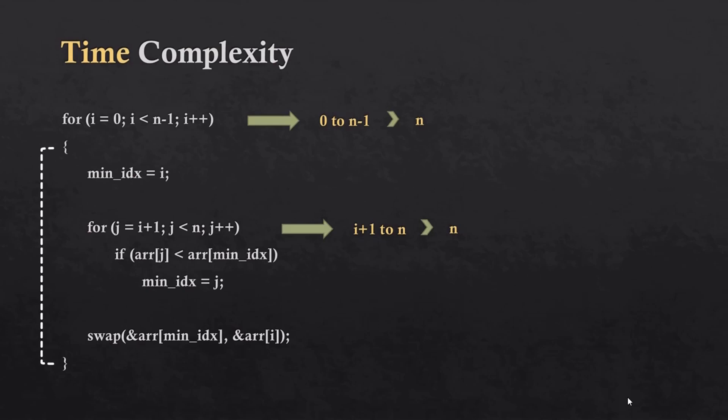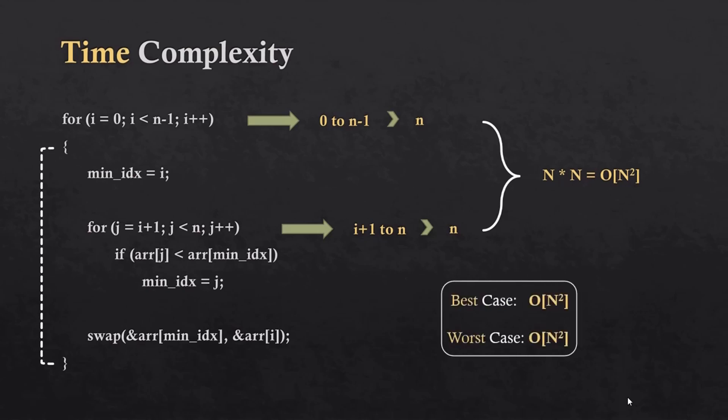Whether the algorithm finds the minimum element or not, it will always run through the complete array. That's why both loops run from 0 to n. By combining both loops, we conclude that the time complexity of selection sort is O(n²). Both the best and worst case of selection sort are also O(n²), since it always iterates all values.